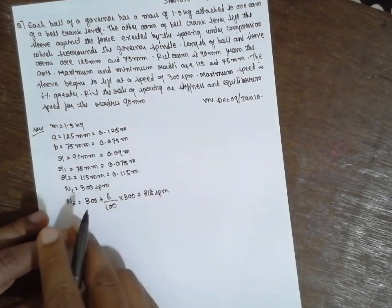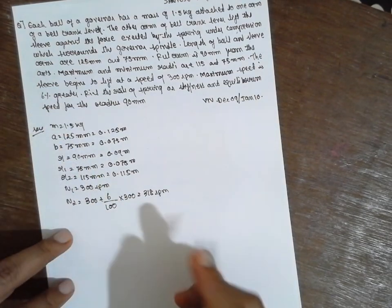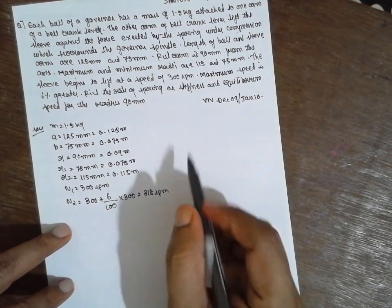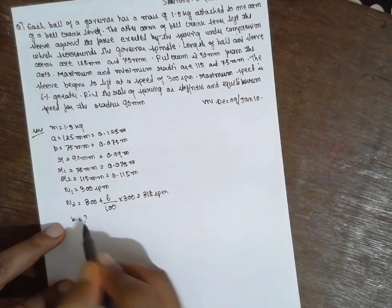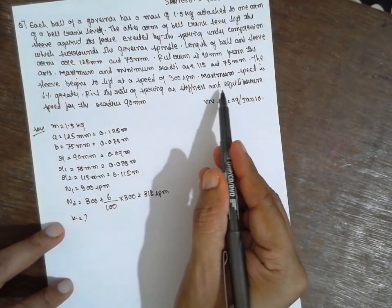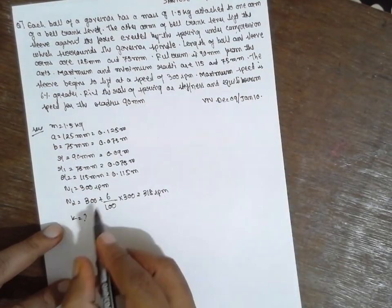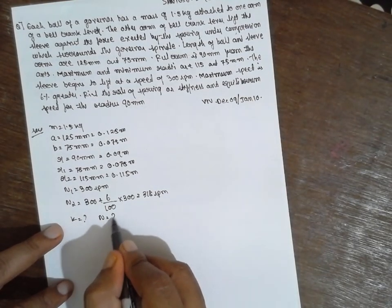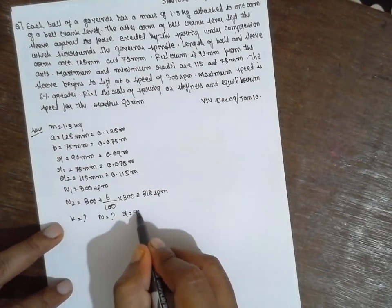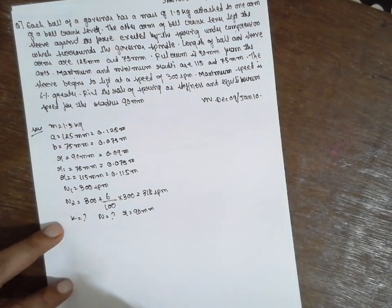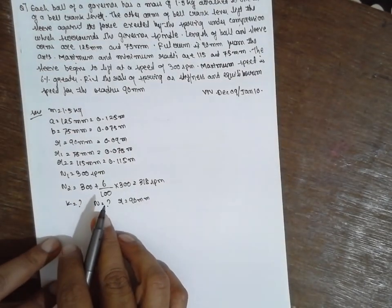This is the procedure you have to follow when the speed increase is given as a percentage — here 6%. We need to find the rate of the spring, that is stiffness K, and the equilibrium speed N at a radius of 90 mm.